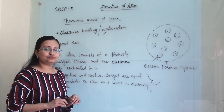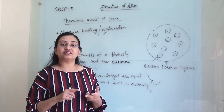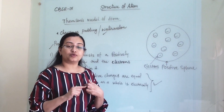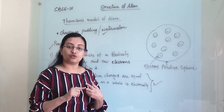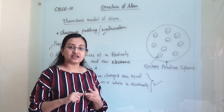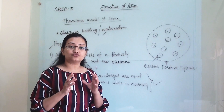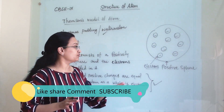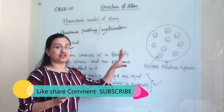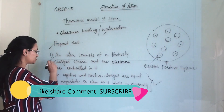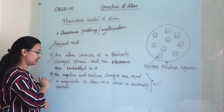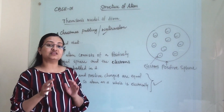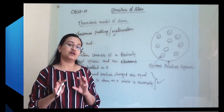In the exam, questions can come like: draw the structure of the proposed model of J.J. Thomson, or write two points proposed by J.J. Thomson. So you need to remember both the structure and these two points — what he predicted and what he proposed about the atom.